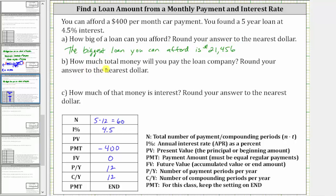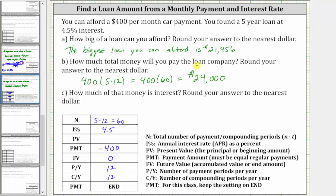For part B, how much total money will you pay the loan company? If you max out your loan, you will be paying $400 per month every month for the five years, and therefore you pay the loan company a total of $400 times the number of months in five years, which is five times 12, equal to 400 times 60, which is equal to $24,000.